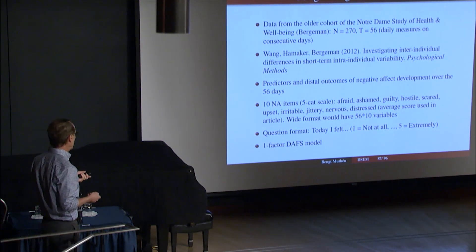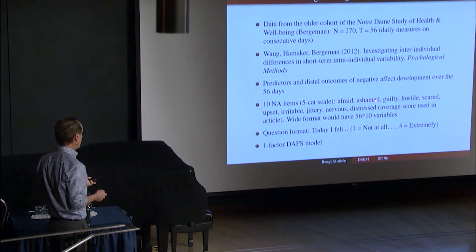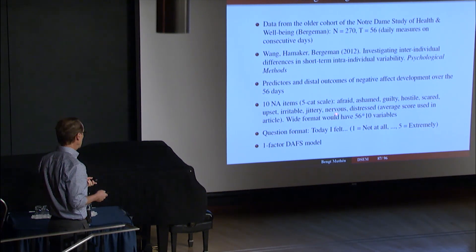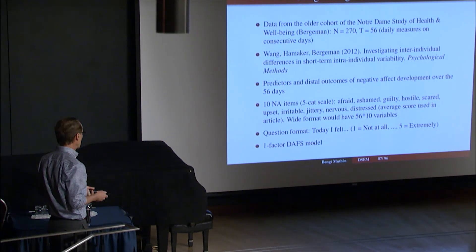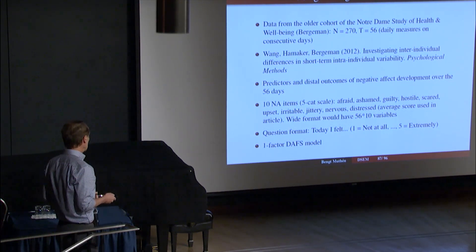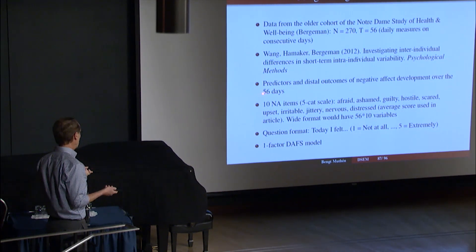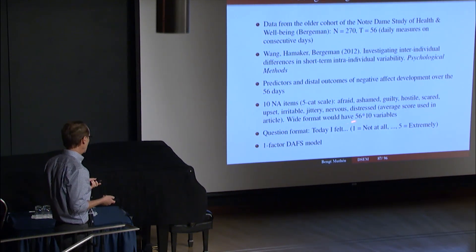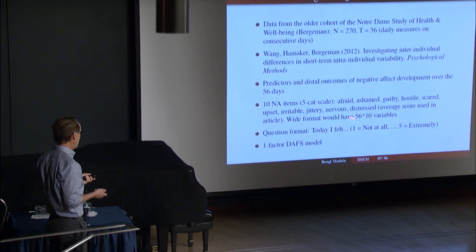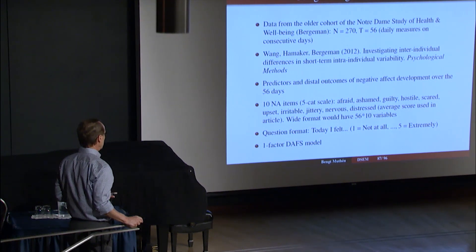Ten negative affect items. Each item is on a five category scale. And the items have to do with being afraid, ashamed, guilty, hostile, scared, upset, irritable, jittery, nervous, distress. The average score was used in the article. Now, you can certainly do a wide format analysis for 56 time points. Single wide format analysis. But, so T is 56. But you have 10 variables for each time point. So that would be 560 variables. That's a little wide. Big covariance matrices. Heavy computations.